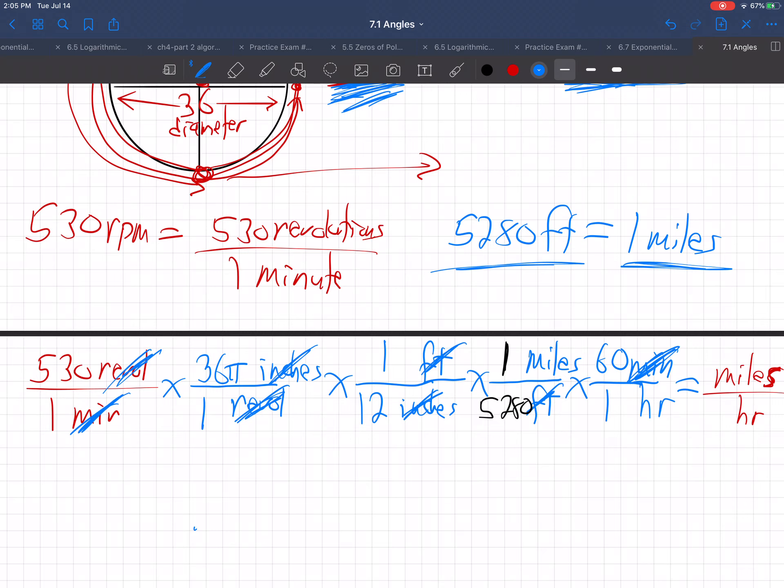What units do we have left not crossed out? Miles is not crossed off. And hours, which is what they want, miles per hour. So what do I actually do on my calculator? It's really simple. Anything in the top, you multiply. Anything in the bottom, you divide. And the order does not matter at all.